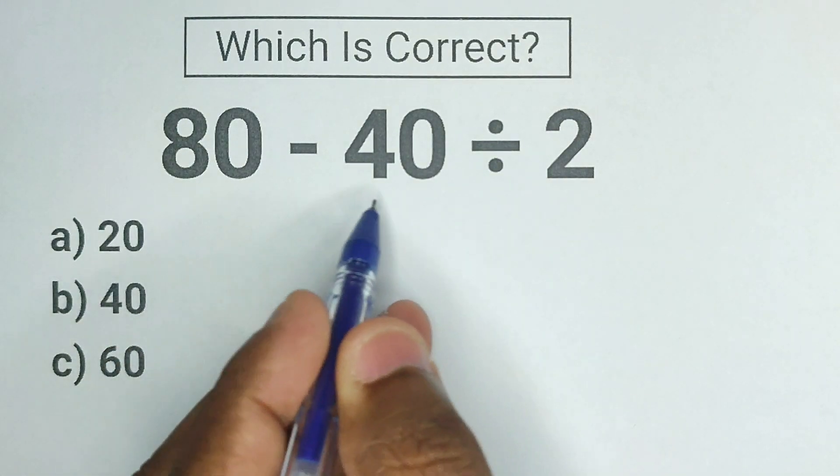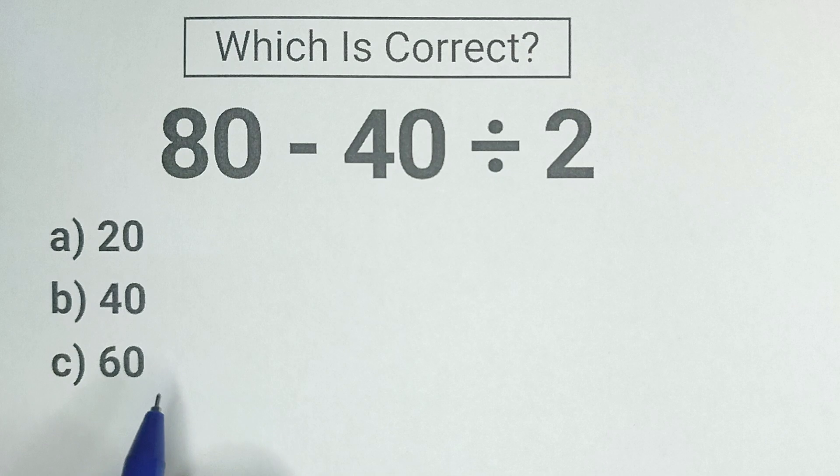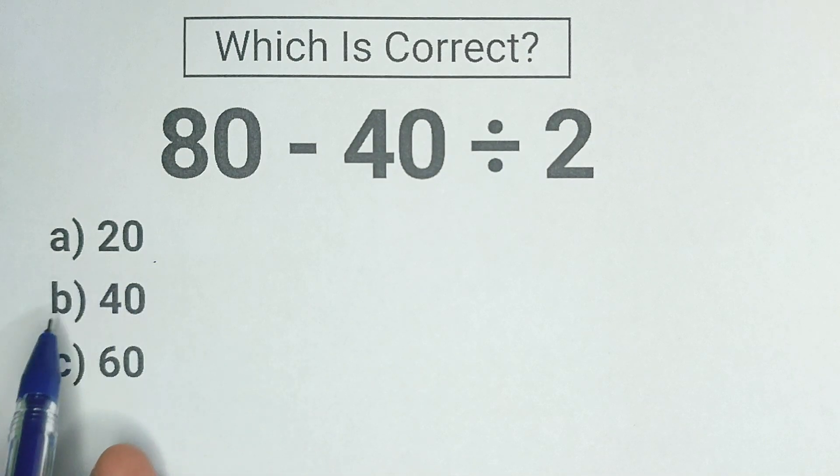Okay, here we have 80 minus 40 divided by 2, which is the correct answer. There are three options, option A 20, option B 40, and option C 60.